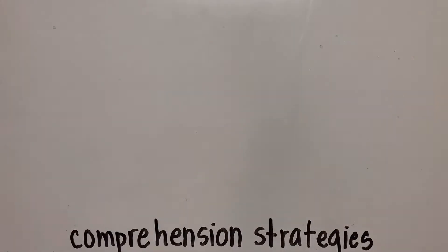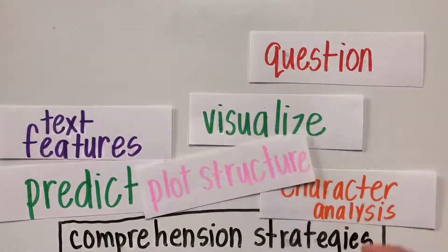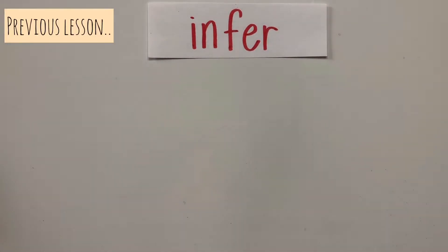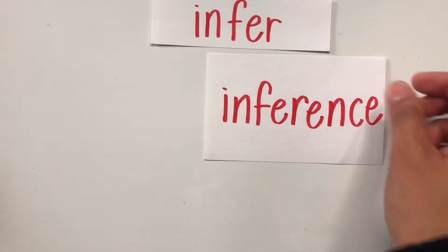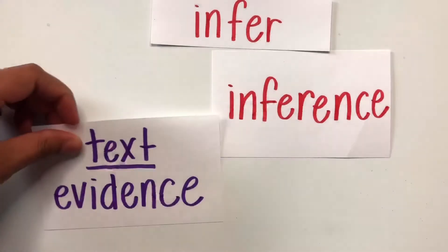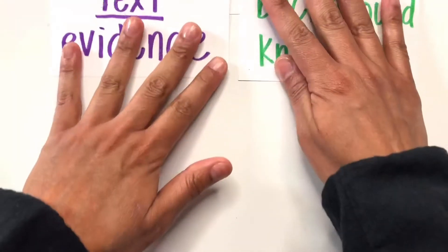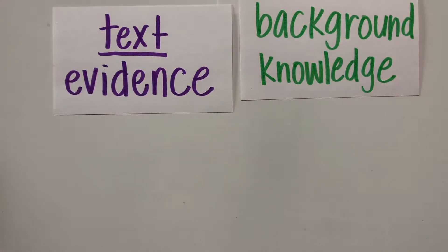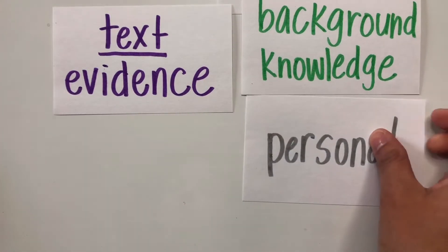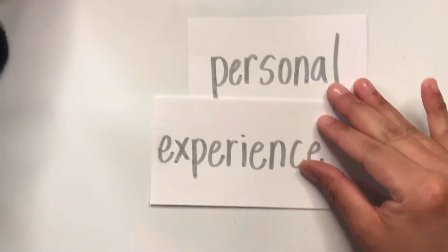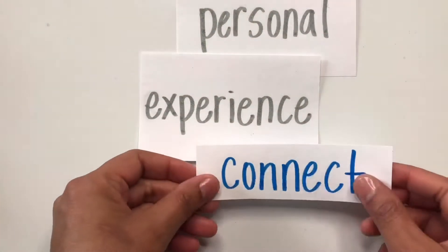Out of all these comprehension strategies that we are learning, we will focus on making connections. In our day two lesson we learned how to infer, which means to make an inference. We make an inference using text evidence and background knowledge. Our background knowledge consists of our personal experiences. When we use our personal experience, we are making connections with the text.